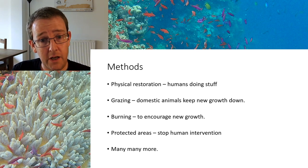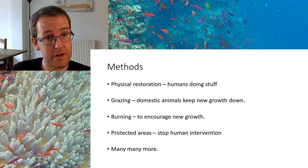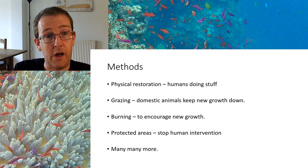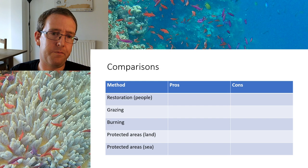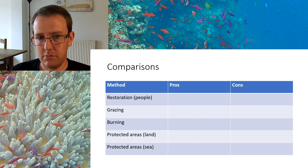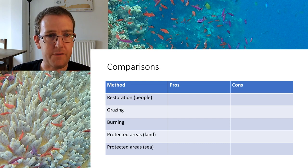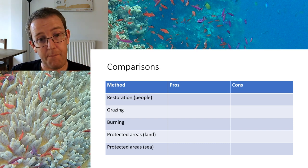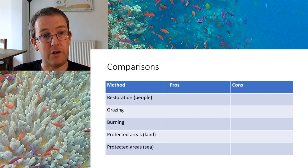That's one method: physical restoration — humans doing stuff. We've already mentioned in the AS level other methods like grazing, where you use domestic animals to keep down growth; burning to encourage new growth; and protecting areas by stopping humans from going in. There are many different examples of conservation that examiners could throw at you. What I want you to do is take a table like this and spend around 20-30 minutes using your textbook and Google to research the pros and cons of these different methods — they all have good and bad aspects, and they're applicable in some environments but not others. Pause the video now, go research that, and come back in half an hour.